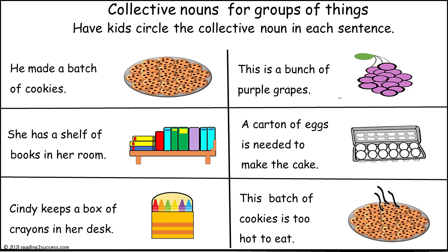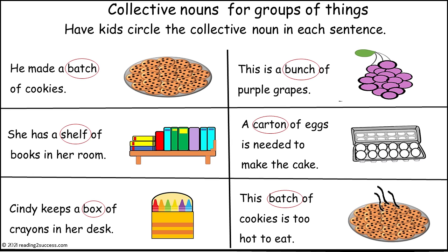Now have kids circle the collective noun in each sentence. This is a completed example. 'He made a batch of cookies' — batch. 'She has a shelf of books in her room' — shelf. 'Cindy keeps a box of crayons in her desk' — box. Moving to the next column: 'This is a bunch of purple grapes' — bunch. 'A carton of eggs is needed to make the cake' — carton. And 'This batch of cookies is too hot to eat' — batch is the collective noun.